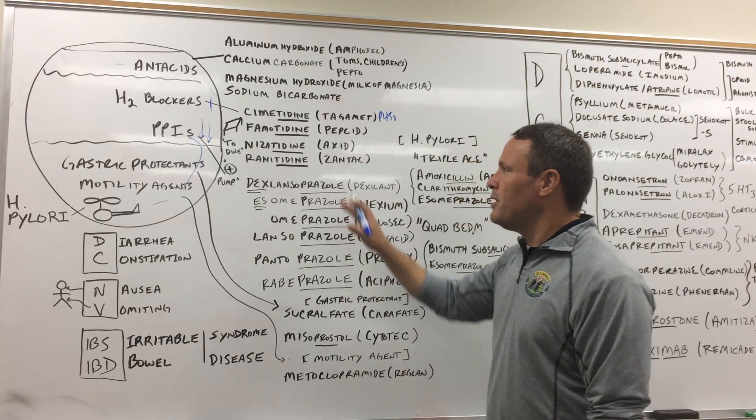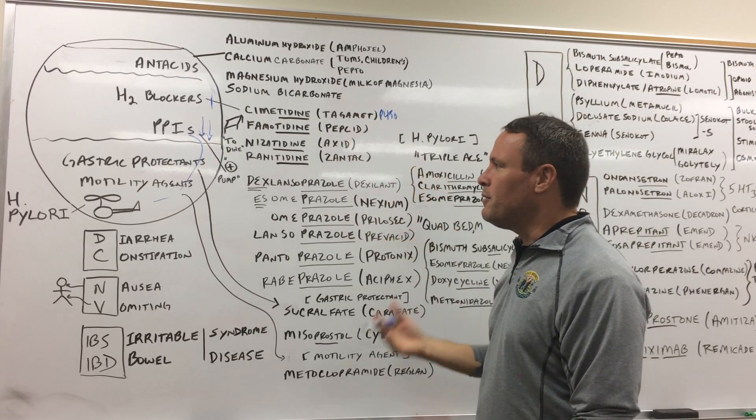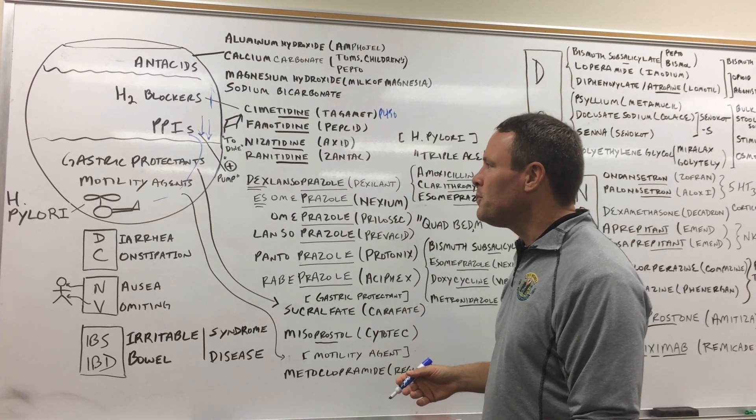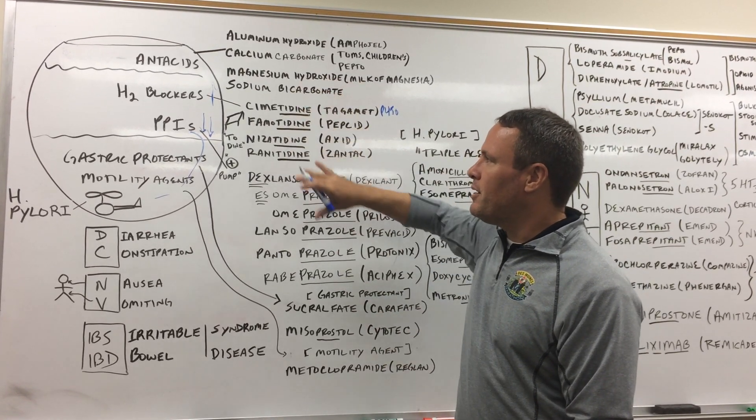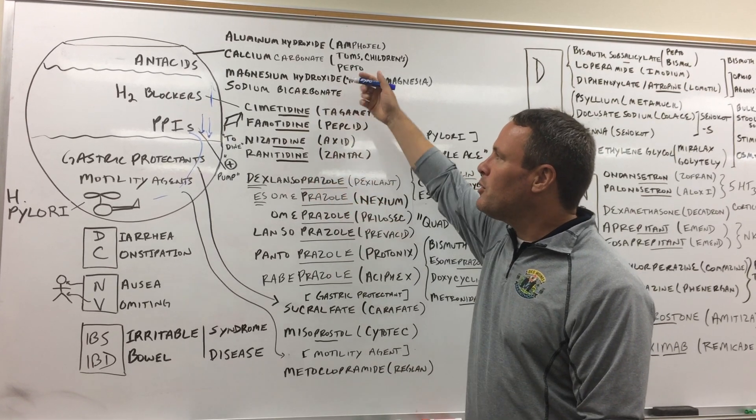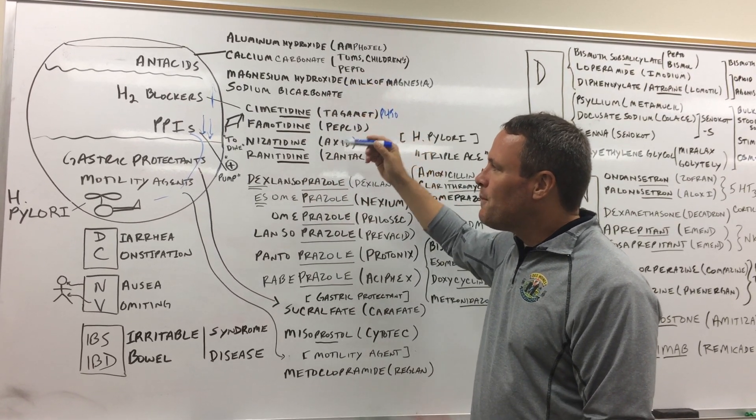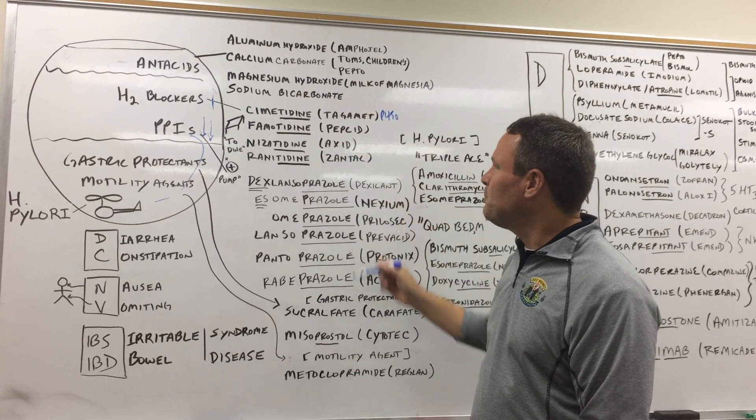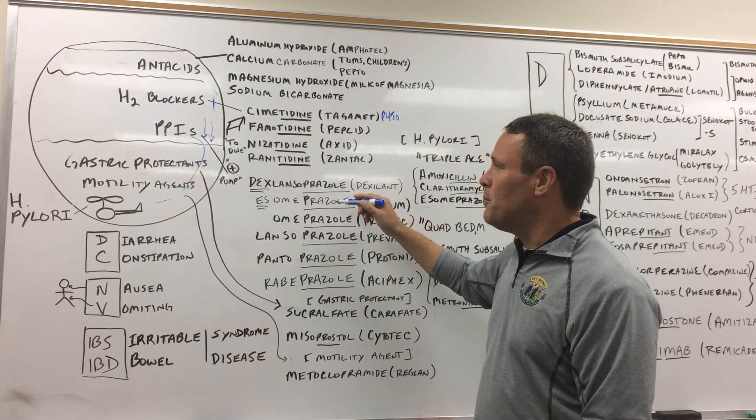And I'm not going to go over the mnemonics right now for the words. You can find those in other videos I've made. But the goal is to see everything visually and together. So most of the time, somebody would try an antacid first, then they would go to an H2 blocker, and then they would go to a PPI.